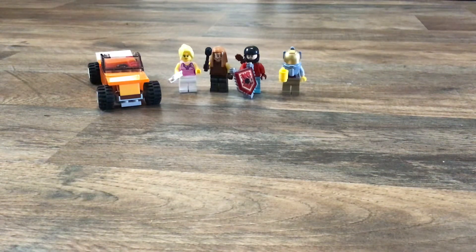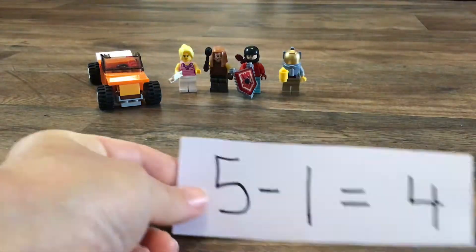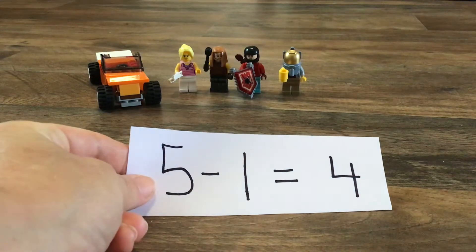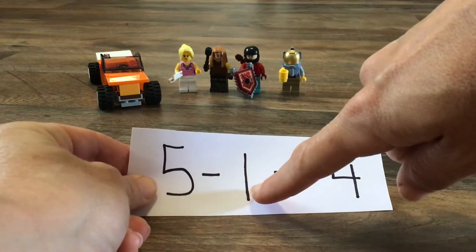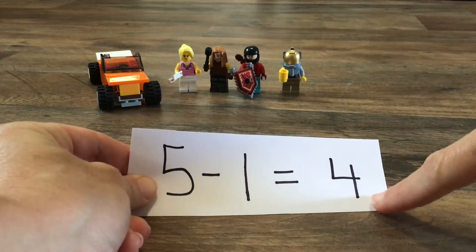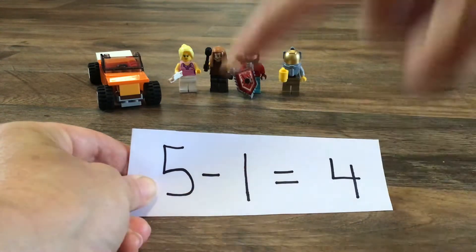So that is the same as doing subtraction. This would be a problem that looks like what we had. We had five Lego Friends. One of them went away and now we have four. So this little symbol right here, this little stick in the middle,